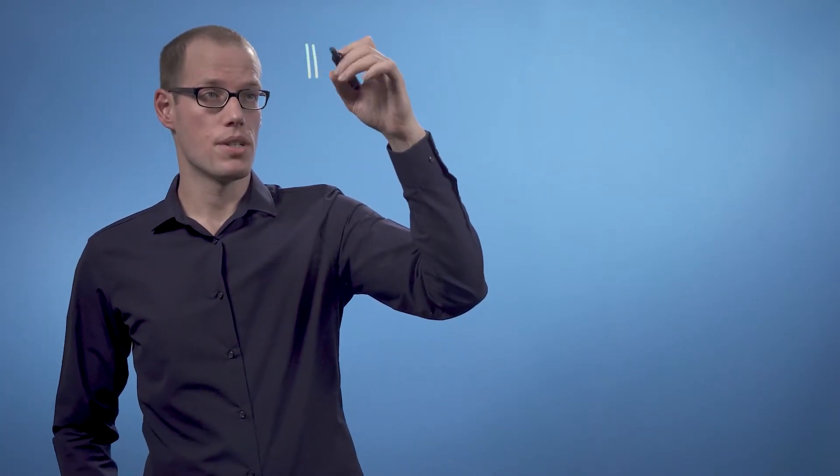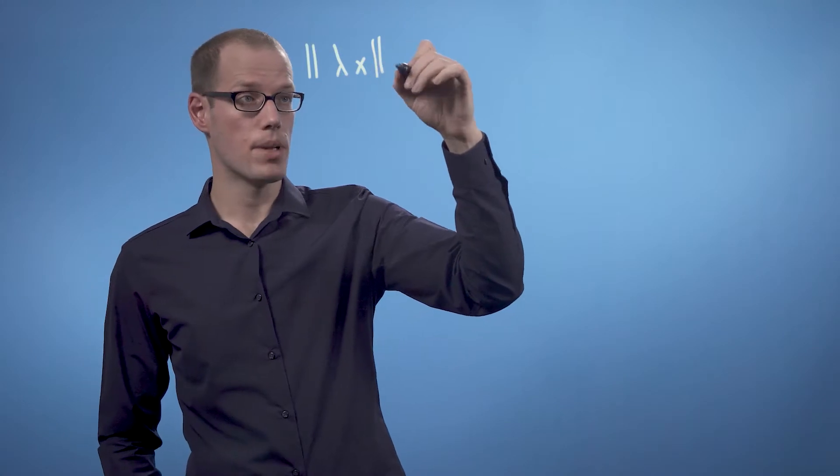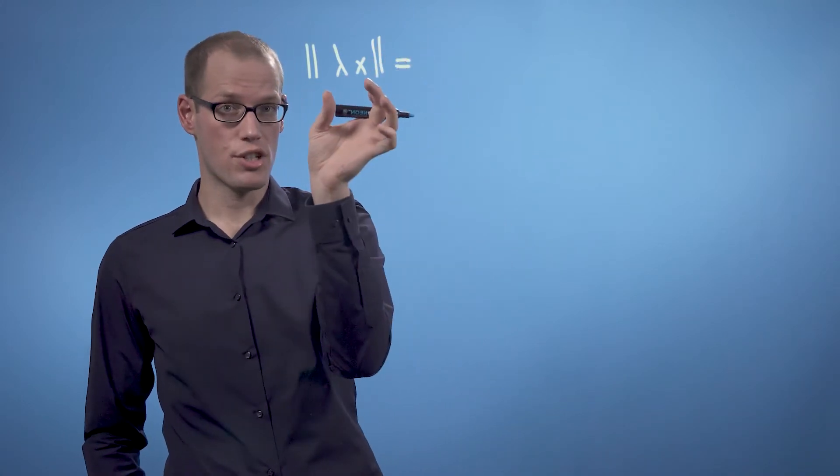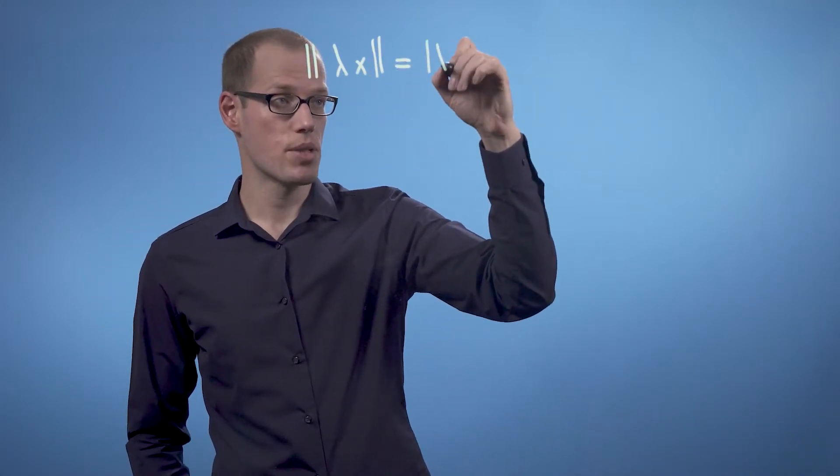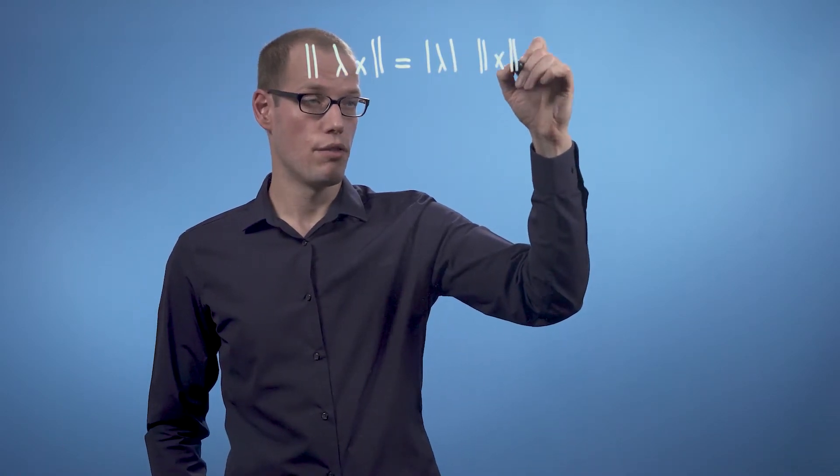The norm that we just looked at also has some nice properties. Let me write a few of those down. So in particular, one of the properties is that if we take a vector and stretch it by a scalar λ, that the norm of this stretched version is the absolute value of λ times the norm of x.